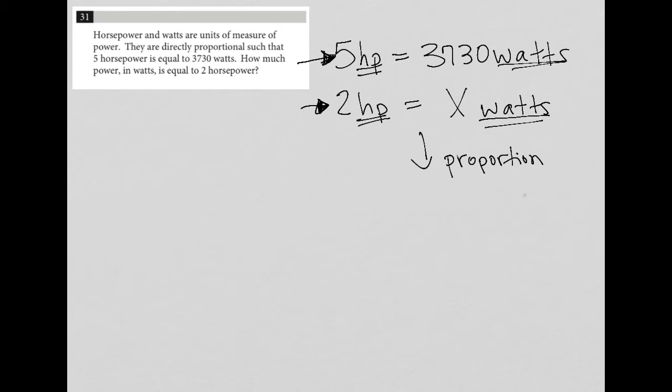So we're going to rewrite this information in terms of fractions. We're going to say, every 5 horsepower goes along with or is equivalent to 3,730 watts. So this has to be equal to 2 horsepower and its corresponding number of watts, which is x. So the ratio of horsepower to watts,